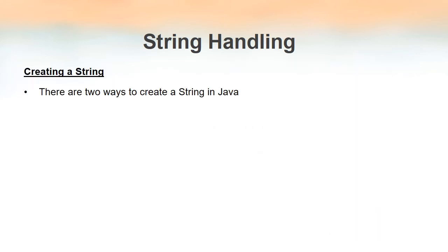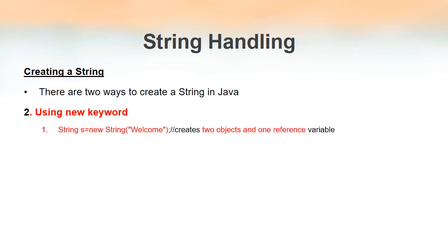The second way to create a string is by using the 'new' keyword. We have seen this keyword used for creating objects: 'ClassName objectName = new Constructor()'. Since String in Java is actually a class, we can create objects of class String using the new keyword. For example: 'String s = new String("welcome")'. Here, s is the reference variable. When we create a string object using the new keyword, JVM creates two objects and one reference variable.